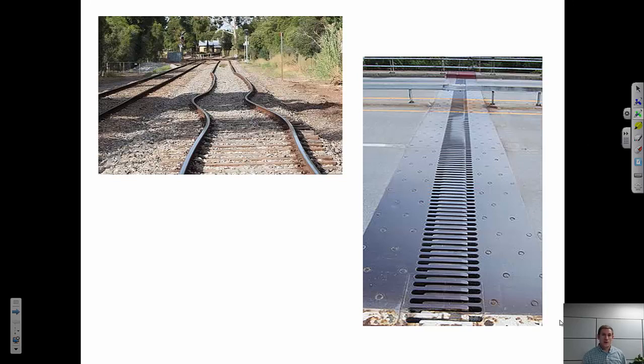Now why do we care about thermal expansion? Well if we don't engineer our materials properly we could see something like this. This is a railroad track that has buckled. As it heated up, perhaps seasonally, the railroad ties would tend to expand but there's no place for them to expand linearly. What we see is this buckling behavior.